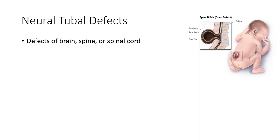Now that we've looked at how the neural tube forms, we'll look at neural tube defects. These defects in a developing fetus are happening very early — between the 18th and 28th day of conception, very early on. Any kind of neural tube defect can be detected early through genetic testing. If someone chooses to have genetic testing done on their unborn child, it will pick up neural tube defects — one of the main ones they check for.